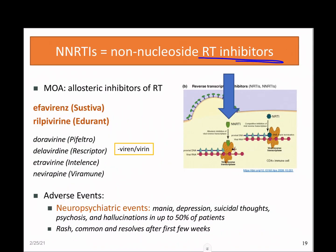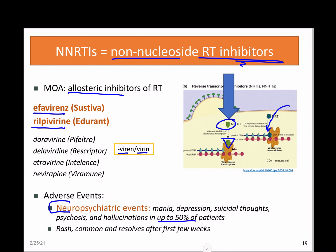Non-nucleoside reverse transcriptase inhibitors — NNRTIs or non-nukes — are allosteric inhibitors of reverse transcriptase, blocking it at a different site than the nukes. Key drugs include efavirenz and rilpivirine; you can generally identify non-nukes by '-avir' or '-avirine' in their names. They don't have as wide a variety of adverse effects, but have really significant neuropsychiatric effects — mania, depression, psychosis, hallucinations, suicidal thoughts — affecting up to 50% of patients.